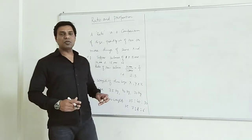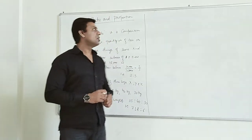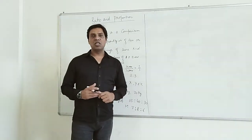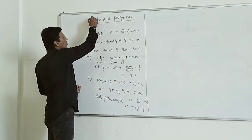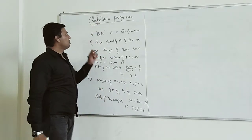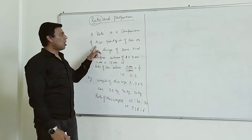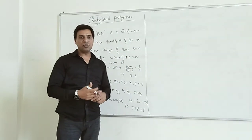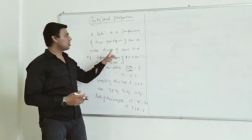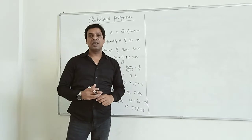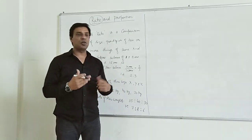Our topic is ratio and proportion. First of all, we shall understand what is a ratio. A ratio is a comparison of size, quantity, values, etc. of two or more things of the same kind. There is a ratio of weights, ratio of height, ratio of salary.